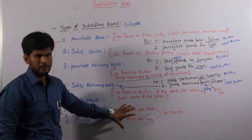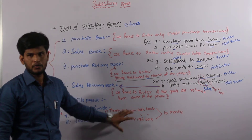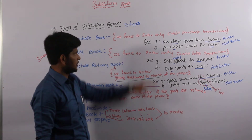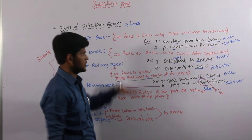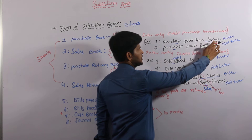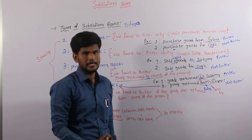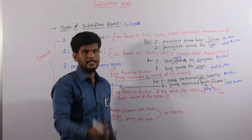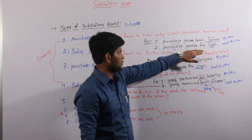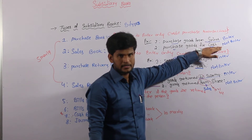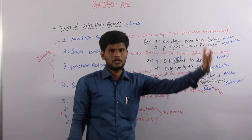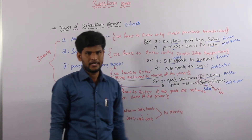Now let us look at which type of transactions we have to enter into our cash book. Starting from the first transaction: purchase goods from a person on credit — this transaction will enter into the credit side of the cash book. Purchase goods for cash — here cash is involved in the purchase, so this is also part of the credit side transaction.